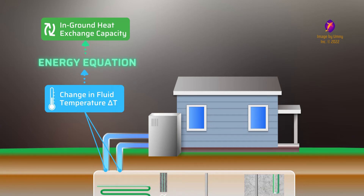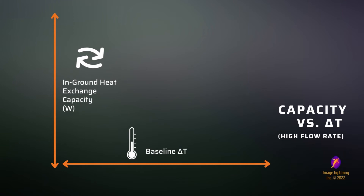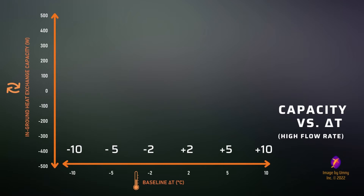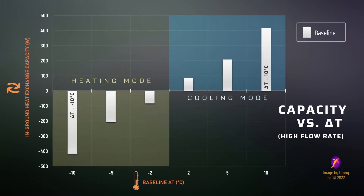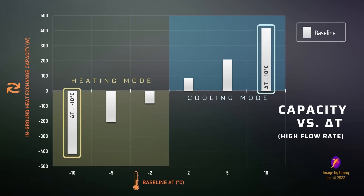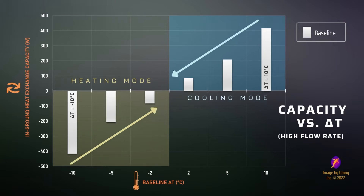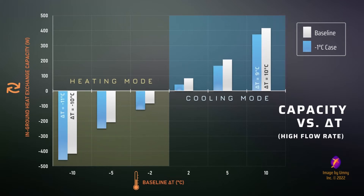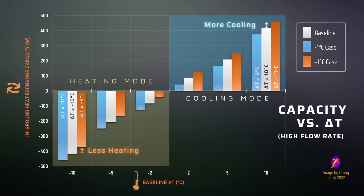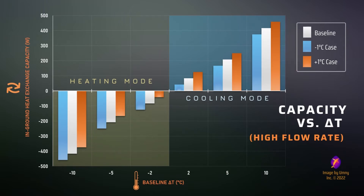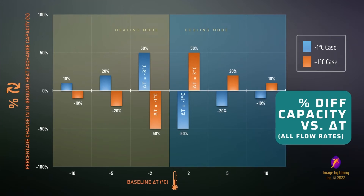Using the energy equation with a constant flow rate and fluid properties, we can compare the baseline delta T to the in-ground heat exchange capacity that results. Here we're working with three delta T magnitudes of 2, 5, and 10. For our baseline case, we expect the heating and cooling capacity from the in-ground heat exchangers to be just over 400 watts when the delta T is minus 10 and positive 10 degrees Celsius respectively. As the change in fluid temperature reduces, the in-ground heat exchange capacity decreases. If the baseline delta T were reduced by 1 degree for all cases — from negative 10 to negative 11 degrees Celsius — this results in more heating energy than the baseline case and less cooling energy. When the baseline delta T is instead increased by 1 degree Celsius, the in-ground heat exchangers produce less heating energy in the heating mode but more cooling energy in the cooling mode. The magnitude of all these values is affected by the fluid's flow rate; however, the percentage difference in capacity from a 1 degree Celsius change is the same for all flow cases.